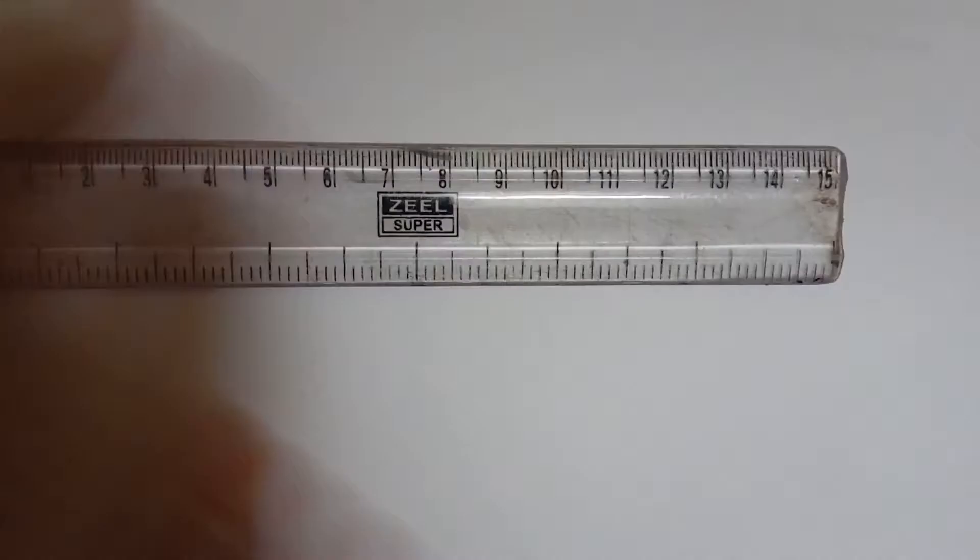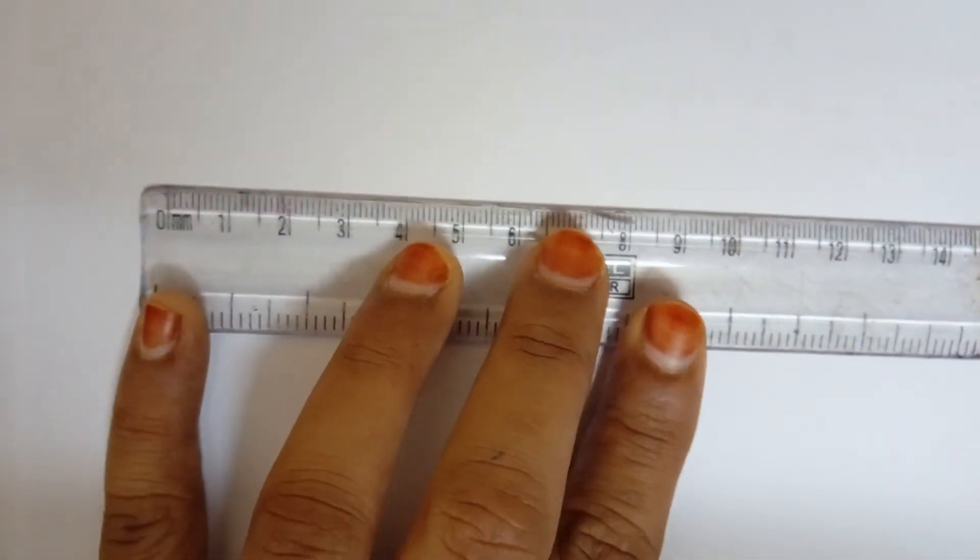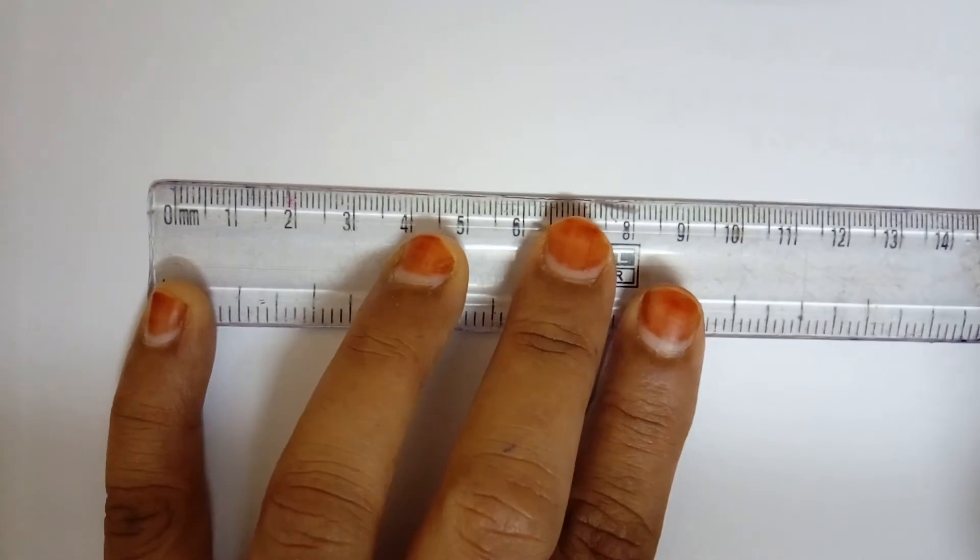To draw the basic skeleton of concave lens, it's almost the same as what we have done for convex lens. What we need to do is we need to draw a 15 centimeter line.